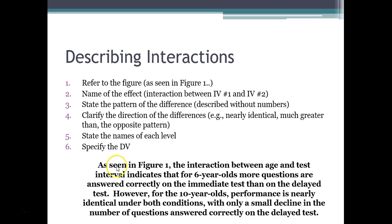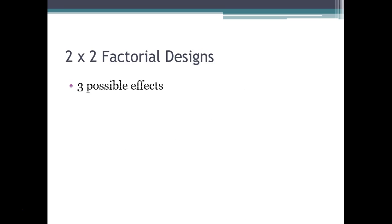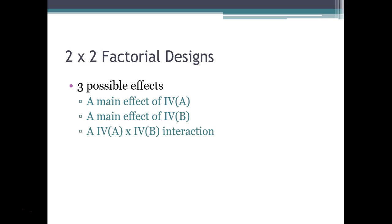To describe the interaction: as seen in the figure, the interaction between age and test interval indicates that for six-year-olds, more questions are answered correctly on the immediate test than on the delayed test. However, for ten-year-olds, performance is nearly identical under both conditions, with only a small decline on the delayed test. In a two-by-two factorial design, look for a main effect of each variable using marginal means, then the interaction between the two.